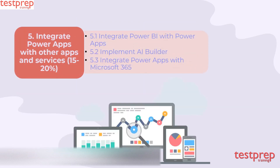Domain 5: Integrate Power Apps with other apps and services, which comprises 15 to 20% weightage in the exam. It includes: 1. Integrate Power BI with Power Apps. 2. Implement AI Builder. 3. Integrate Power Apps with Microsoft 365.